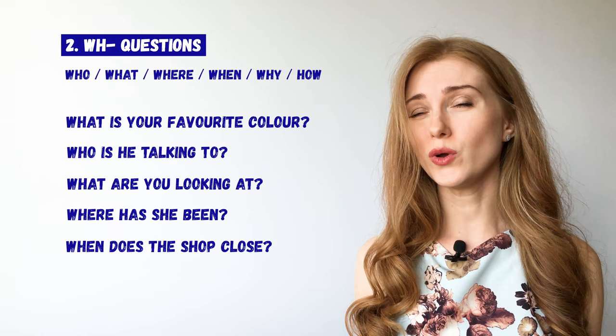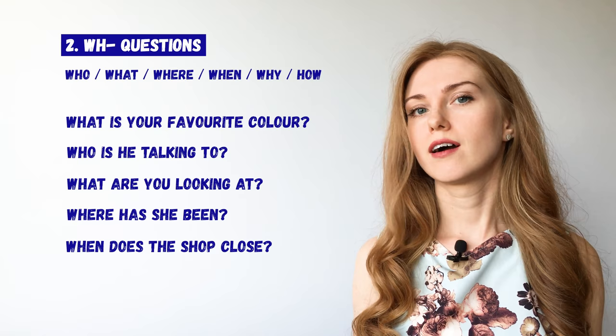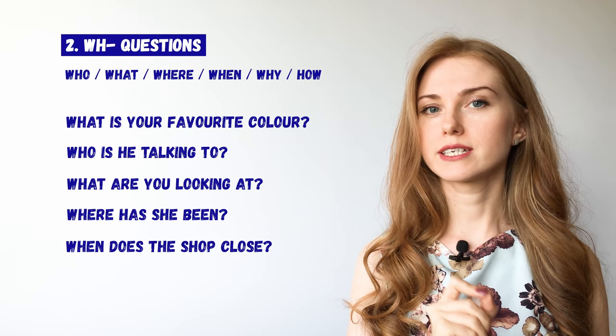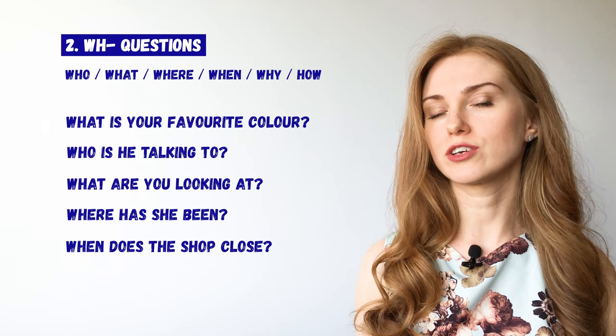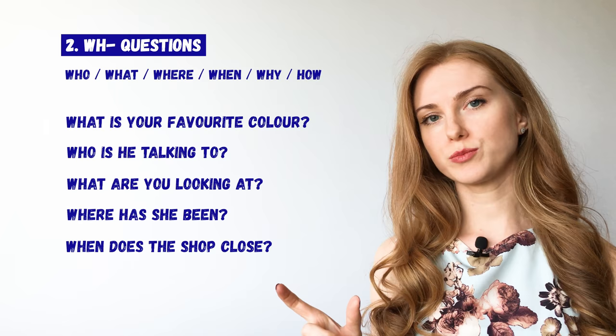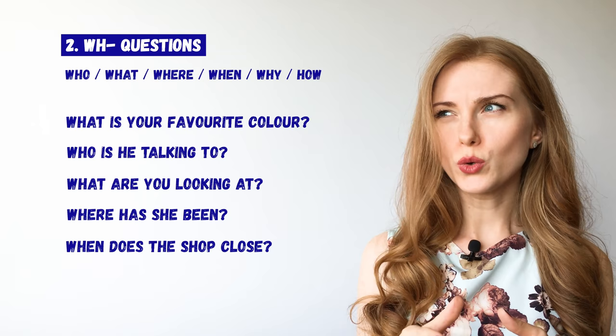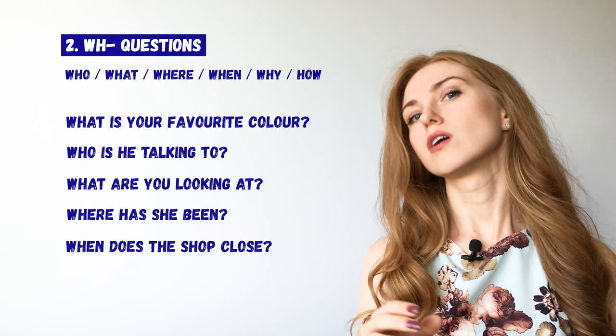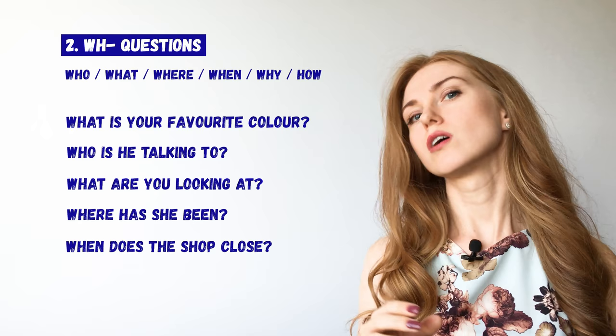For example, what's your favourite colour? You could say it's blue, or my favourite colour is blue. I'd like to note that if you have a preposition referring to your question word, like in 'who are you talking to' and 'what are you looking at', you always put the preposition at the end of the sentence. We don't say 'to who are you talking' or 'at what are you looking'. The preposition comes at the end: Who are you talking to? What are you looking at?